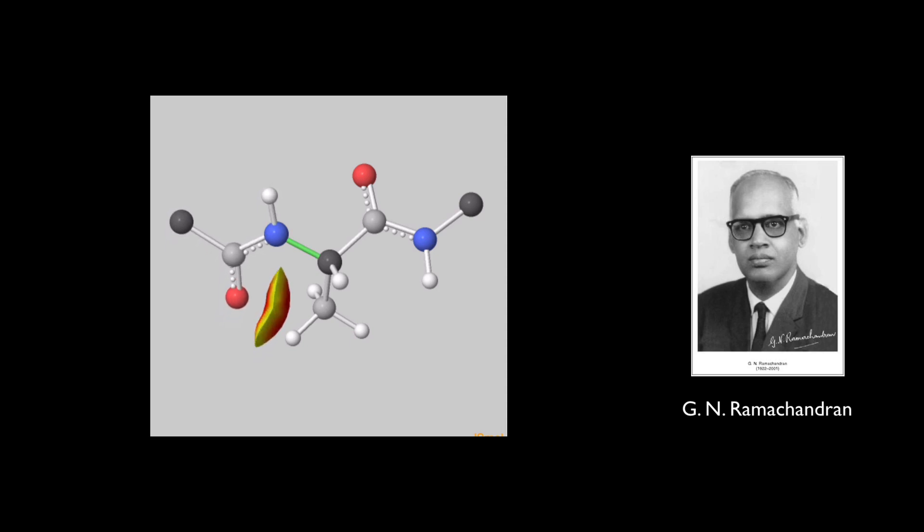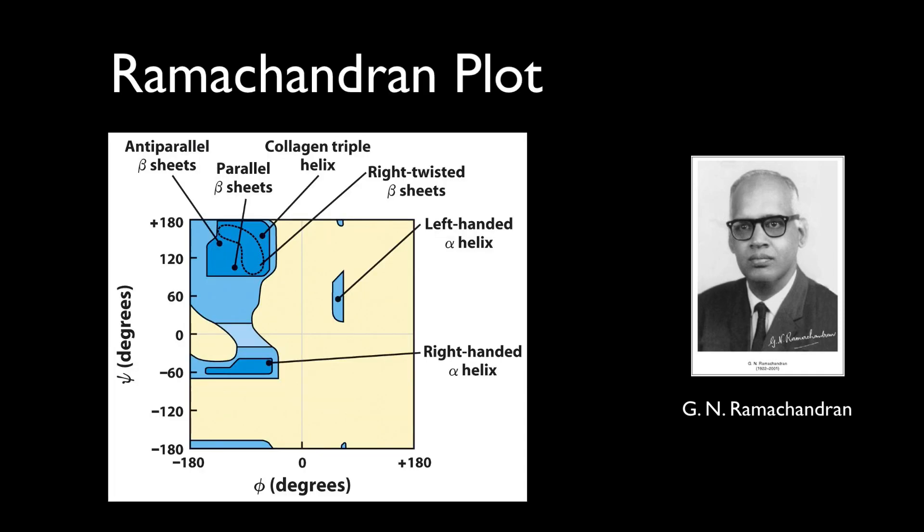Ramachandran's team noted that some geometries aren't possible due to sterics. In other words, a given amino acid cannot adopt some conformations in a polypeptide chain because of unfavorable crowding with the adjacent residues. And when the two backbone angles are plotted, there are distinct regions for the unique elements of the secondary structure.